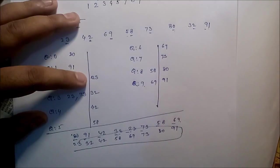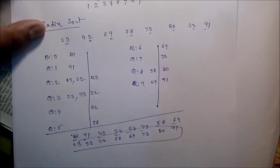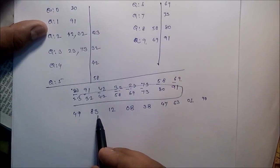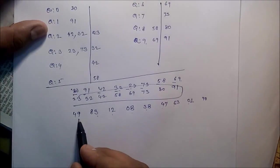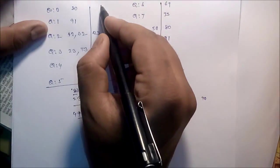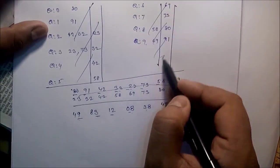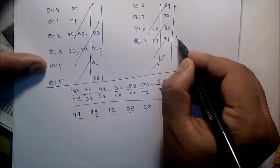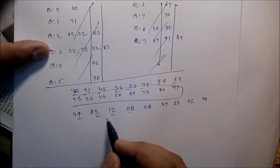So 23, 32, 42, 58, 69, 73, 80, okay. So the data is in sorted order. Now we can take another example. Suppose the data: 49, 83, 12, 08, 38, 47, 63, 01, 90. Now just see the least significant bit.